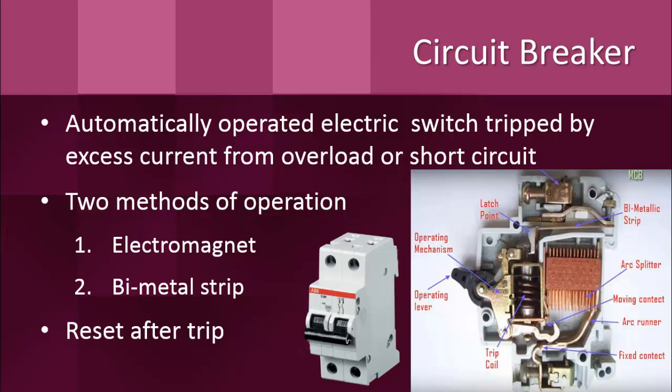A circuit breaker is an automatically operated electrical switch designed to protect an electric circuit from damage caused by excessive current from an overload or short circuit. Its basic function is to interrupt current flow after a fault has been detected. Circuit breakers are made in varying sizes, from small devices that protect low current circuits or individual household appliances up to large switchgear designed to protect high voltage circuits feeding an entire city. The generic function of a circuit breaker or fuse is as an automatic means of removing power from a faulty system.